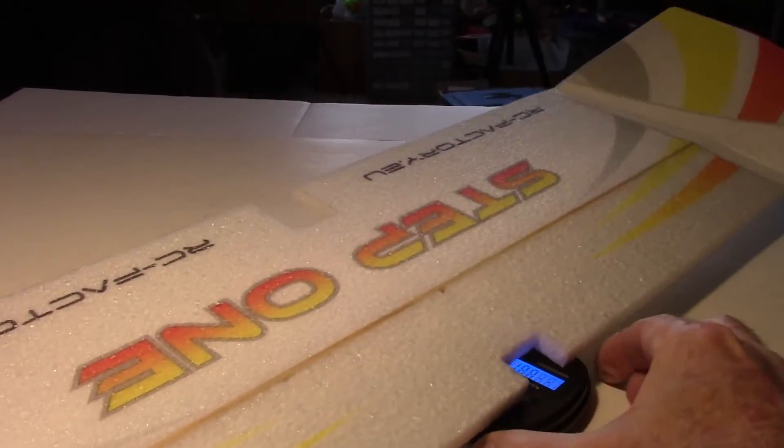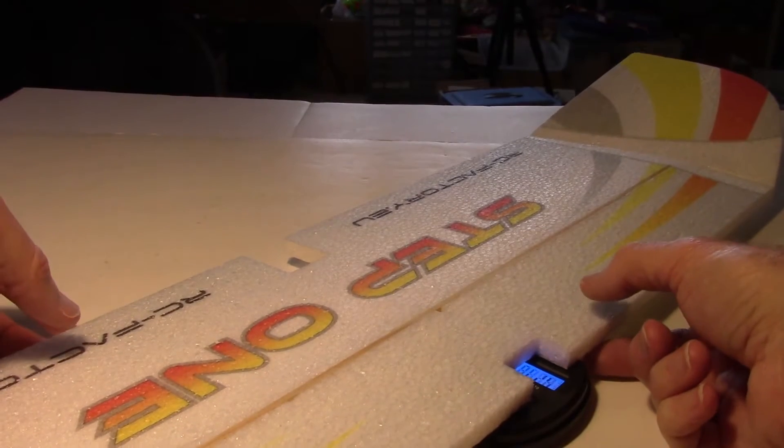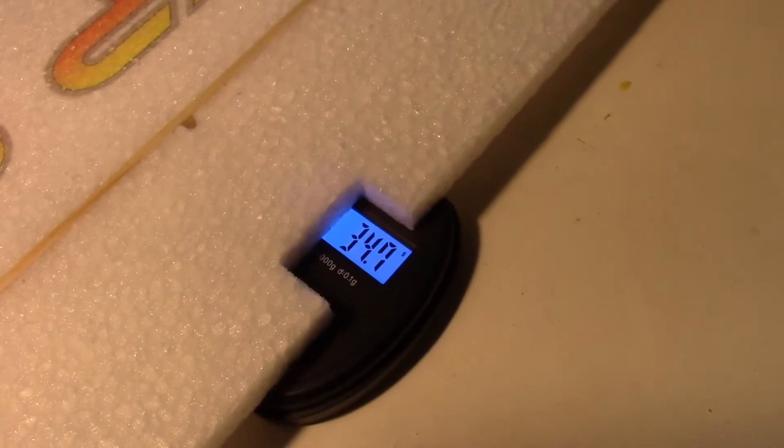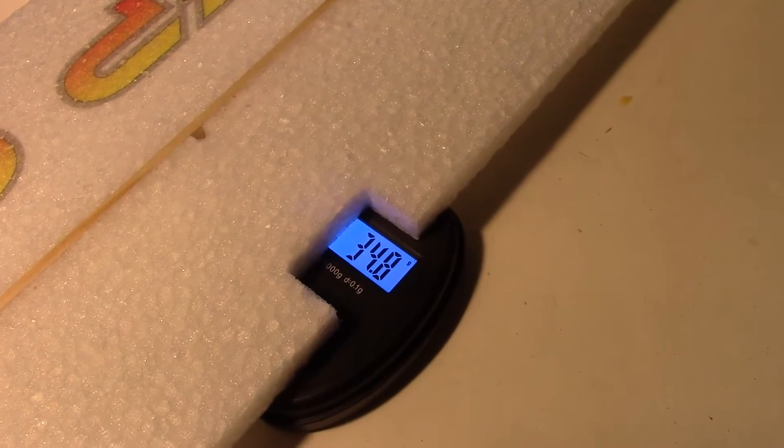Now let's weigh the wing. See how much it weighs. There's the wing. 34.8 grams.